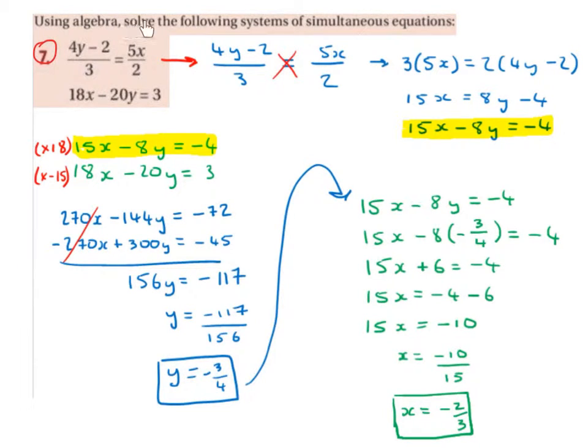Using algebra, solve the following systems of simultaneous equations. 4y minus 2 divided by 3 equals 5x divided by 2 and 18x minus 20y is equal to 3.